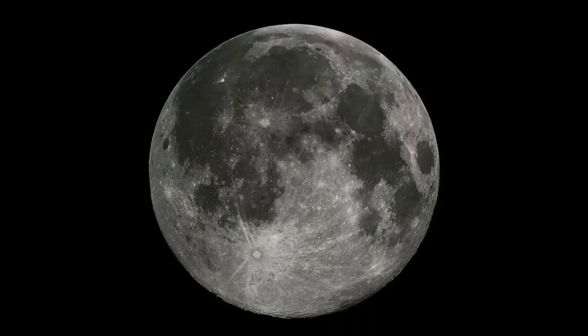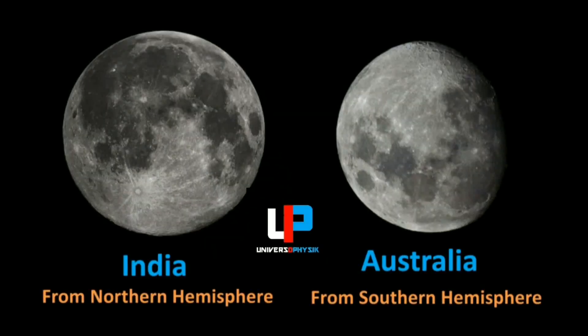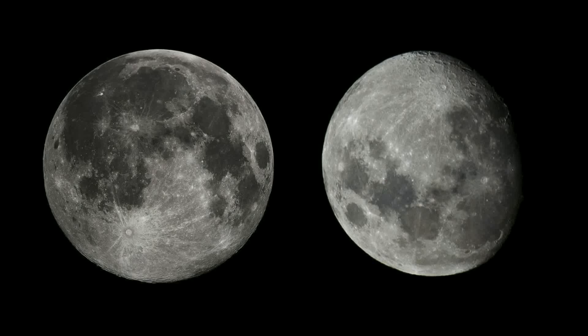This is the moon you can see from the northern hemisphere. This is the moon you can see from the southern hemisphere. Now, combining both the images, you can see the difference. The image of one moon is taken from the northern hemisphere, and the other image is taken from the southern hemisphere. So, let's find out why the moon looks upside down from the southern hemisphere.